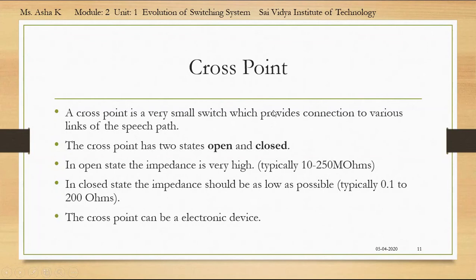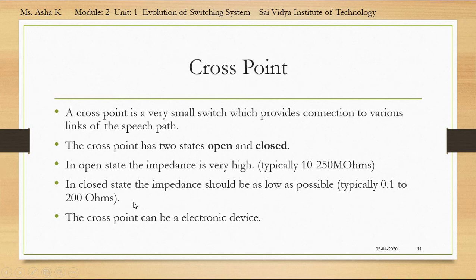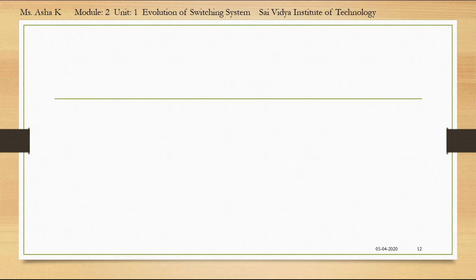Moving on to a cross point: a cross point is a very small switch which provides connection to various links of the speech path. The cross point has two states — open and closed. In the open state the impedance is very high, typically 10 to 250 megaohms. In the closed state the impedance should be as low as possible, typically 0.1 to 200 ohms. The cross point can be an electronic device — a diode or a transistor can be used as a cross point.